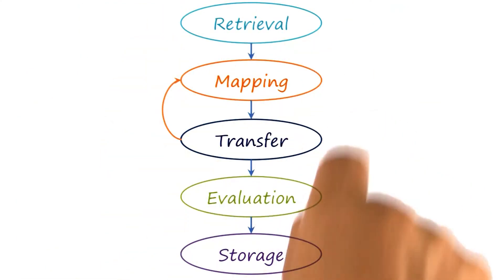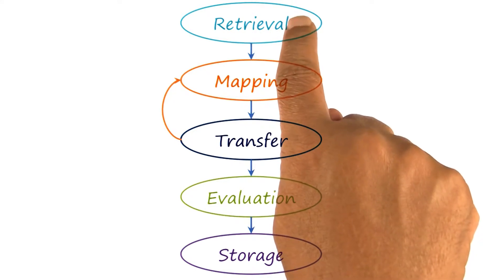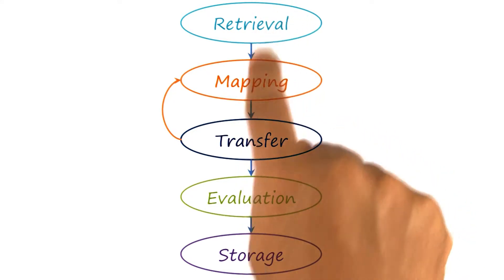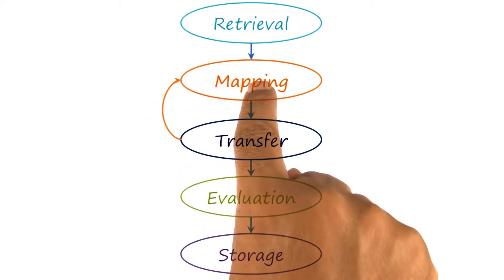We can now revisit our computational process for analogical reasoning. Initially, we had presented this particular process like a linear chain: retrieval, mapping, transfer, evaluation, and storage. In general, however, there can be many loops here.